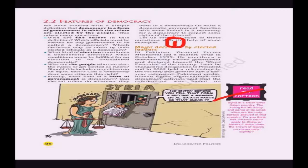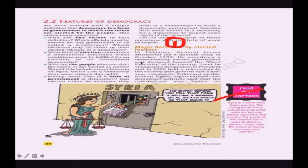Democracy is about the election process — in other forms of government there is no election and leaders come on their own. In democracy, elections are the main feature through universal adult franchise, meaning persons above 18 years of age can vote and choose their leader. So the basic definition: democracy is the form of government in which rulers are elected by the people. The features of democracy tell us what important points make a democracy. The first major feature is that major decisions are taken by elected leaders.